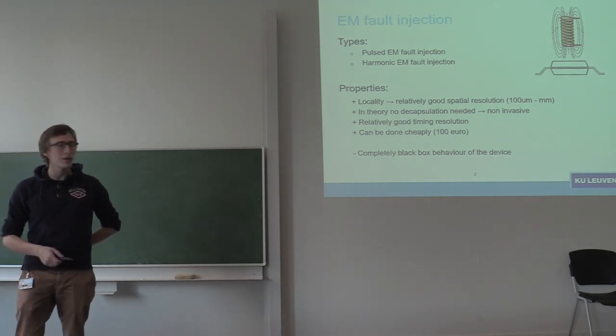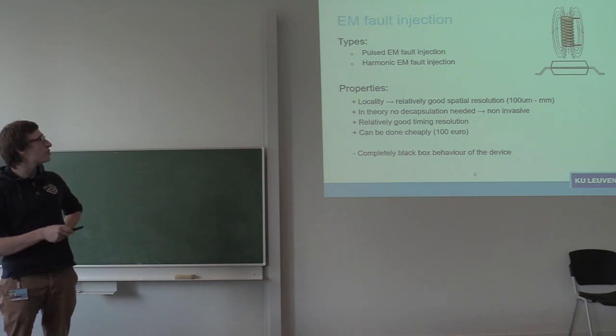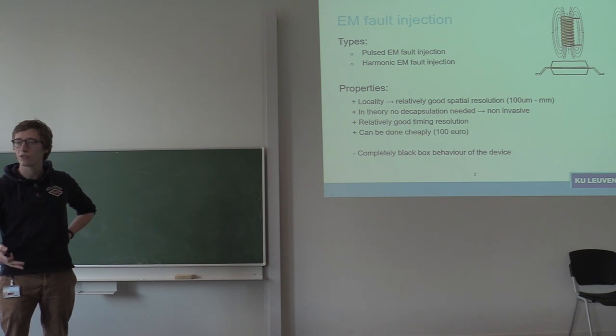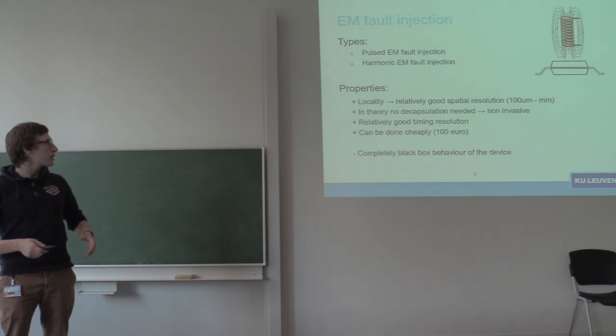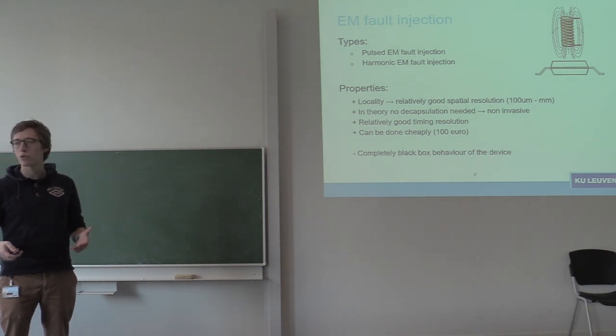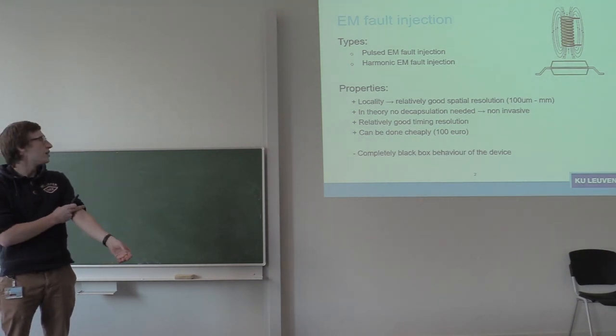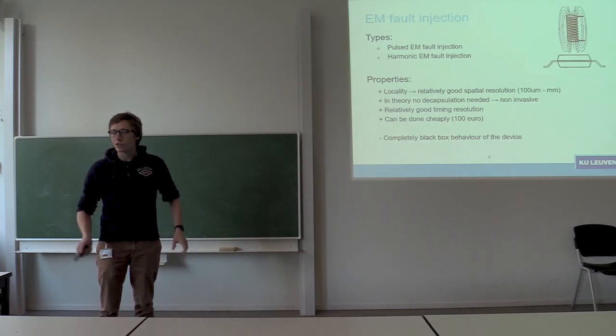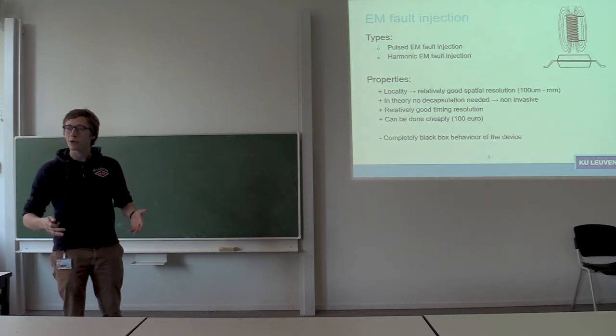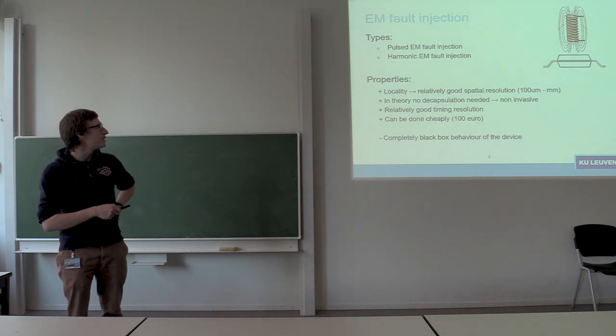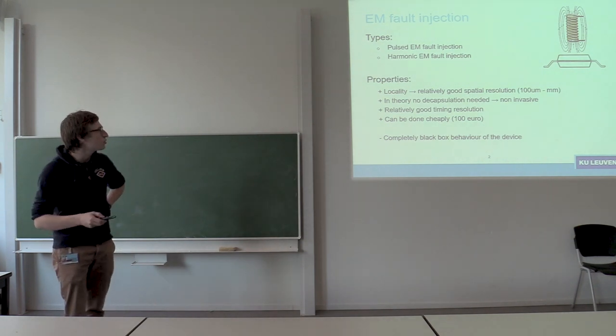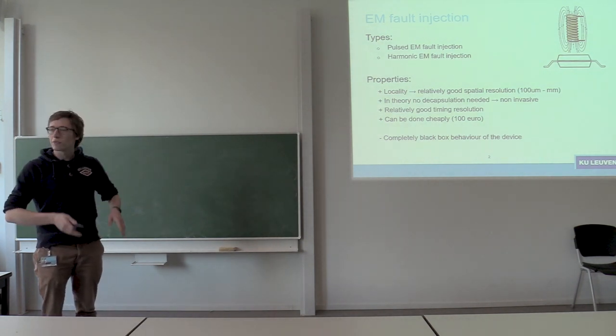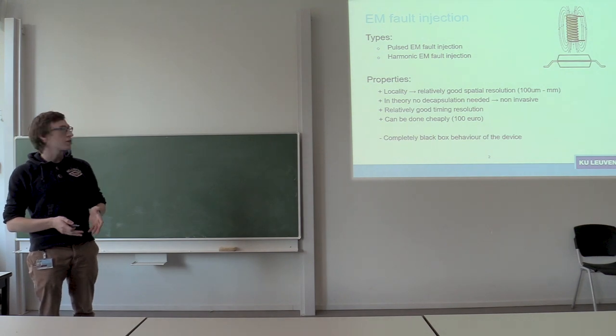So the general properties of EM fault injection are that since you have a relatively small coil which you use to produce your EM field targeting your IC, you have relatively good locality. So you can target an area from 100 micrometers up to a couple of millimeters. Because you're using an electromagnetic wave that can propagate through the package of an IC, in theory you don't need decapsulation. In practice, it's sometimes nice to decapsulate your package because it allows you to put your EM coil or the EM pulse device closer to your actual target, which will increase your resolution.